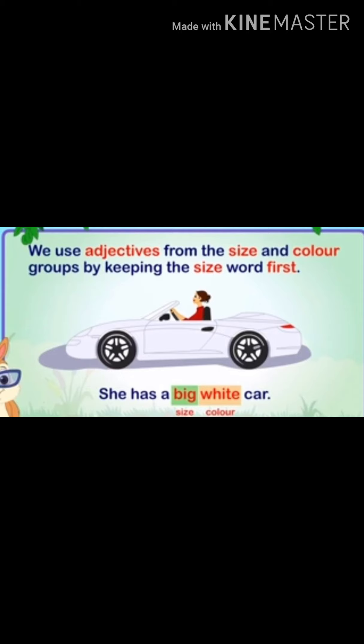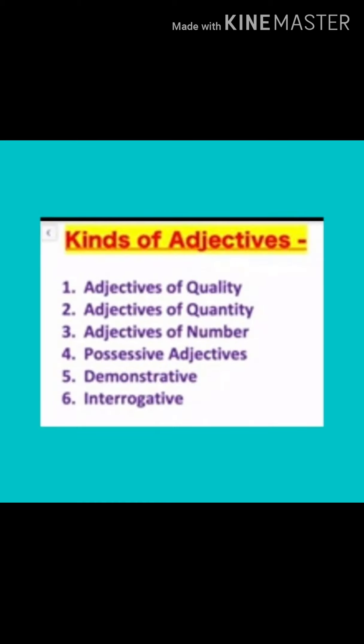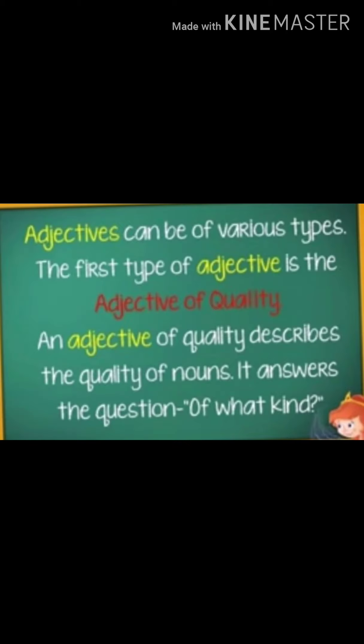So, the adjectives are of six kinds. They are adjectives of quality, quantity, number, possessive adjectives, demonstrative adjectives and interrogative adjectives.